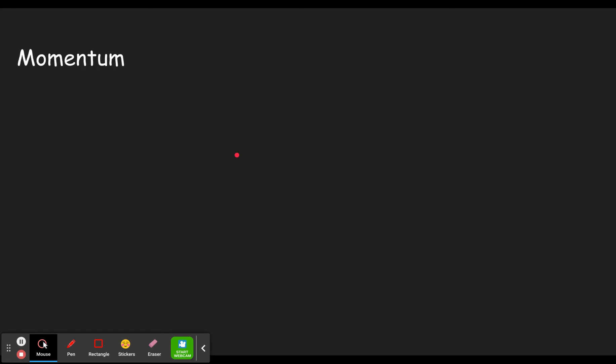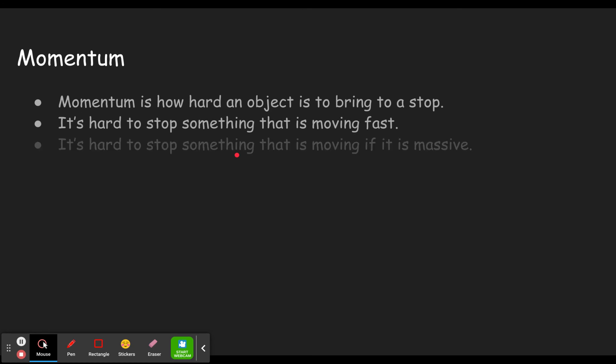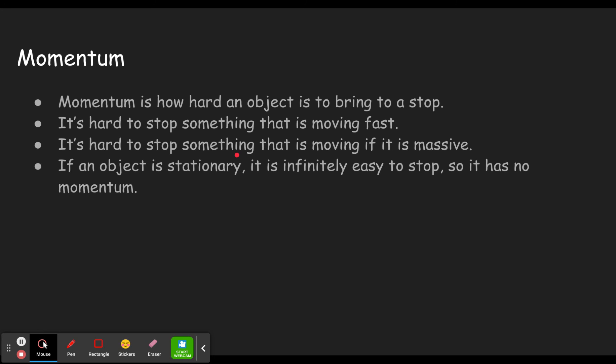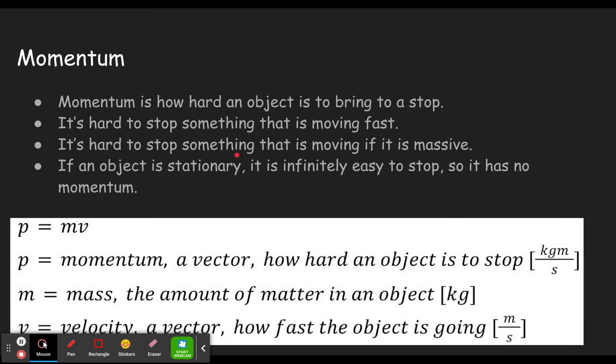That's a joke because we're going to be talking about the concept of impulse. But first, a really quick reminder about momentum. I'm going to link here a video that goes into much more detail. Momentum is how hard an object is to bring to a stop. It's hard to stop something that's moving fast or something that's massive. And if the object is stationary, it's infinitely easy to stop, so it has no momentum. We learned an equation for that. Momentum is p, and it equals the mass times the velocity.